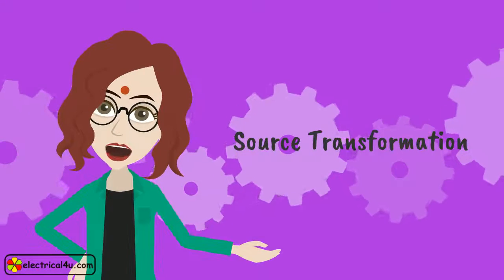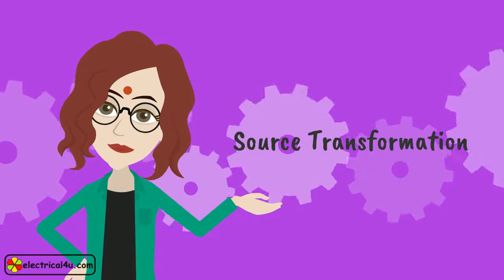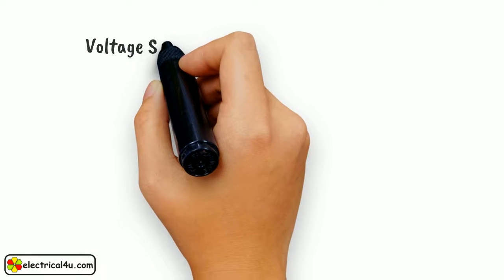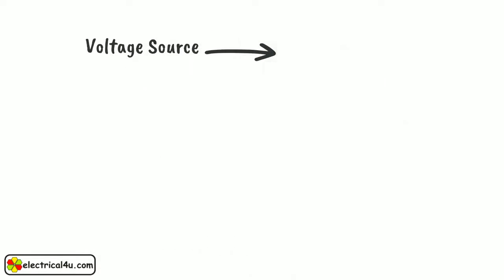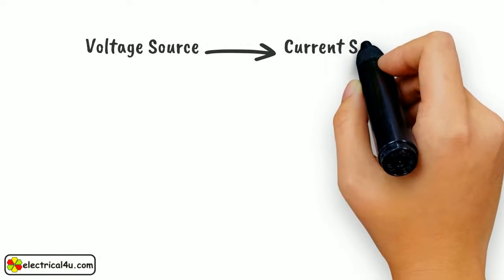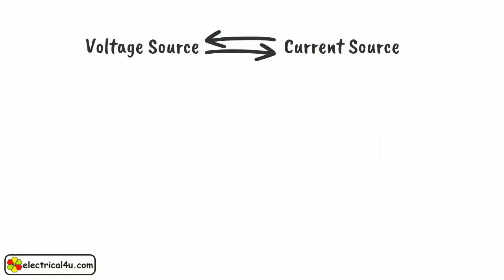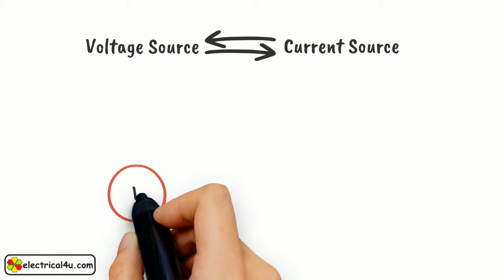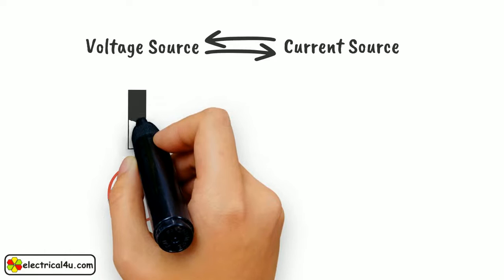Let us talk about source transformation technique. A voltage source can be represented as a current source. Similarly, a current source can be represented as a voltage source. We normally do these to solve various circuit problems.